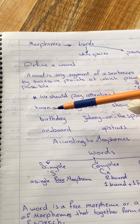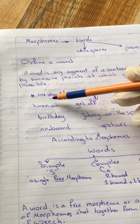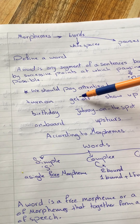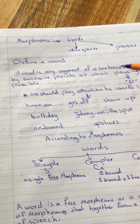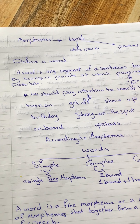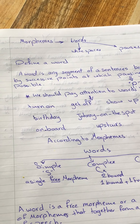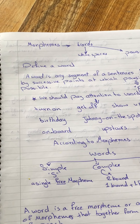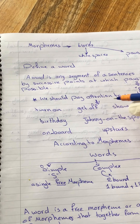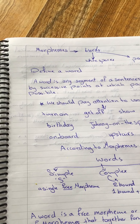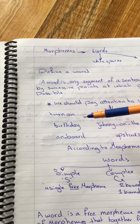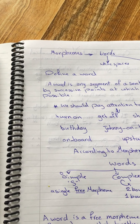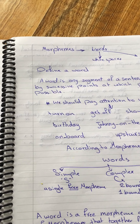For example, 'turn on' — there is a pause, but this is considered as one word. 'Get off' — there is a pause, but this is considered as one word. 'Show up' — this is considered as one word. Speakers of English recognize such words as one word, even though there is a space between them in writing. In speaking there is no pause between them — for example: turn on, get off, birthday — pronounced with no pause between them.